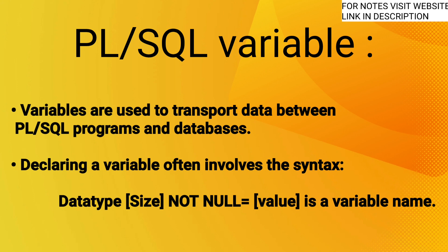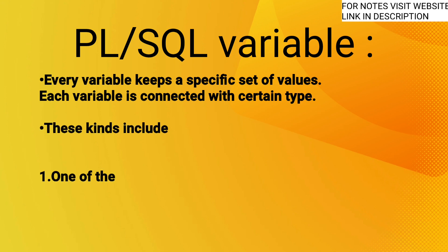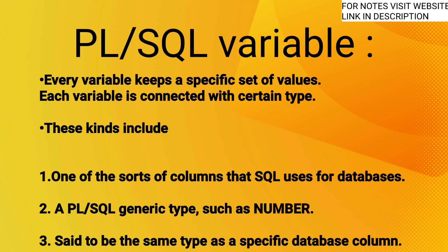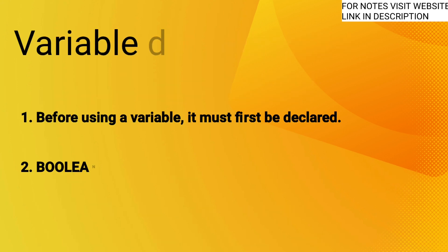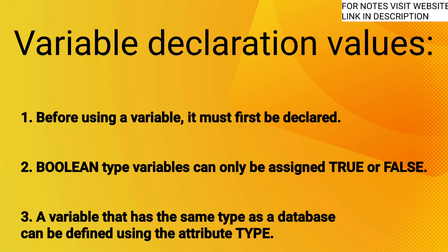Declaring a variable involves the syntax: variable_name data_type(size) NOT NULL := value. Every variable holds a specific set of values and is connected with a certain type. Variable declaration rules: one, a variable must be declared before use; two, boolean type variables can only be assigned true or false; three, a variable that has the same type as a database column can be defined using the %TYPE attribute.